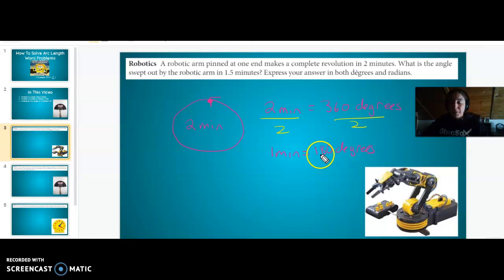So if we go 1.5 minutes, then how far did we go in 1.5 minutes? Well, then we're going to multiply both sides here by 1.5 because then we'll get 1.5 minutes on the left equals how many degrees? Well, 180 times 1.5 is 270 degrees. So in 1.5 minutes, we went 270 degrees. How do we express this in radians?